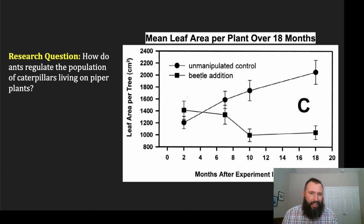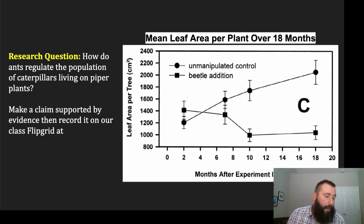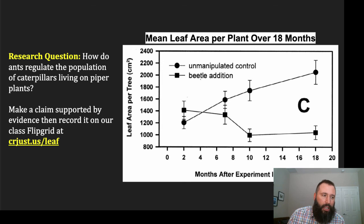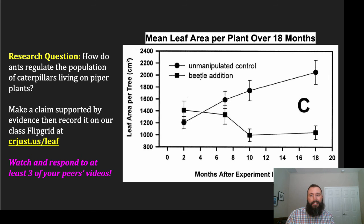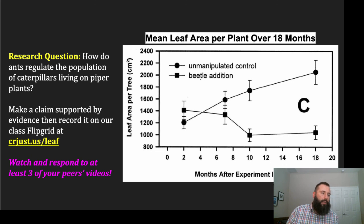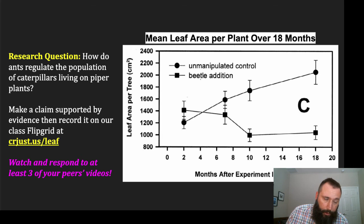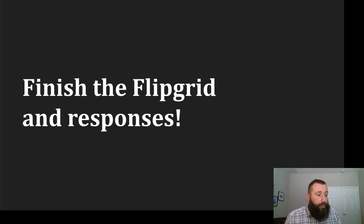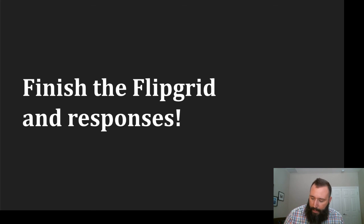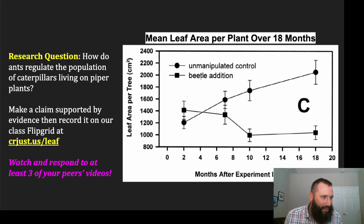The flipgrid video assignment is written in CER form. The question is: how do ants regulate the population of caterpillars living on piper plants? Make a claim supported by evidence, then record it on the class flipgrid at crjust.us/leaf. After recording your CER statement — claim, evidence, reasoning — watch and respond to at least three other peers' videos. Reach out via email if you're having trouble accessing the flipgrid. How do ants regulate the population of caterpillars living on piper plants?